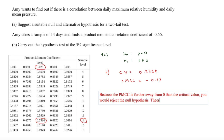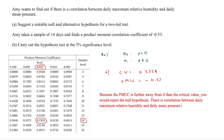Therefore there is correlation between daily maximum relative humidity and daily mean pressure. This is an example where we reject H0 because the PMCC of 0.55 is further away from zero than the critical value of 0.5324.